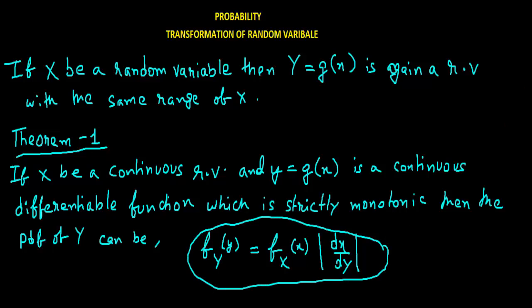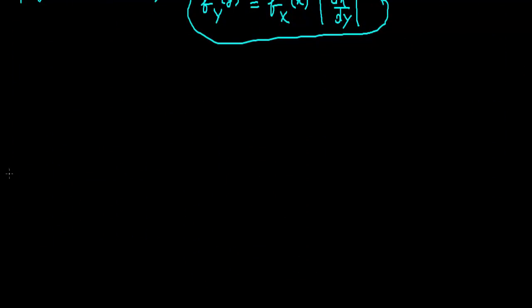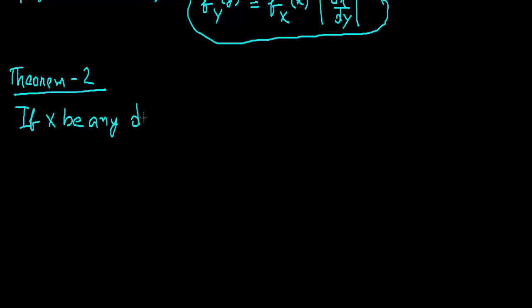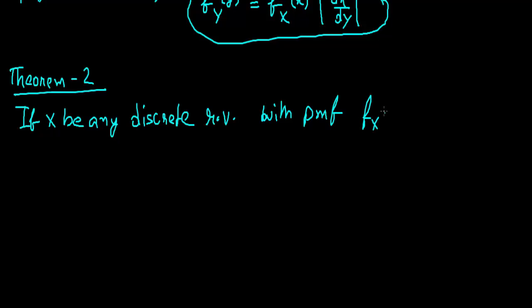Now we will write Theorem 2, or formula 2. This one is for a discrete random variable. For a discrete random variable with PMF f of x at x_i.